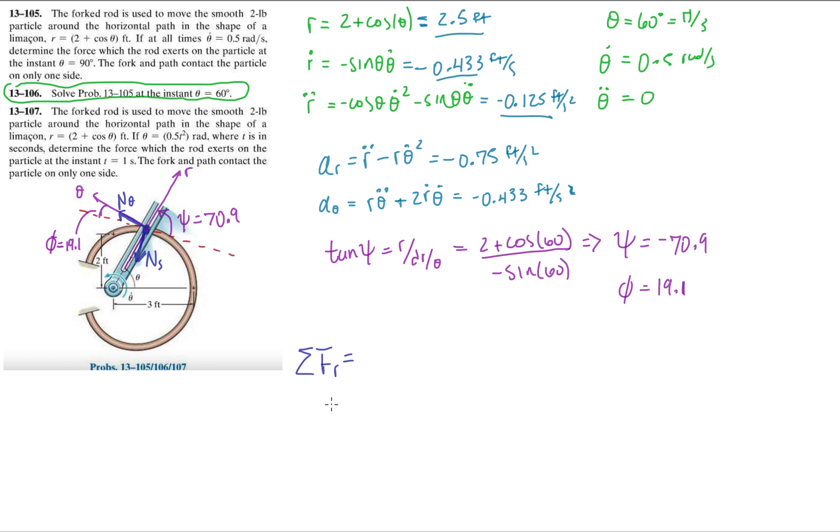Let's do the forces in the radial direction first because I want to find out what n_s is first to then find n_theta. So with this, minus n_s cosine 19.1 equals mass times minus 0.75. Isolate n_s, and we end up with 0.049 pounds. There's the normal force on the particle by the slot, but that's not what they're looking for. They want the normal force on the particle by the rod, which is what we're going to do next.